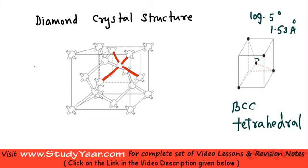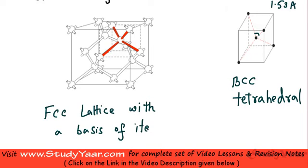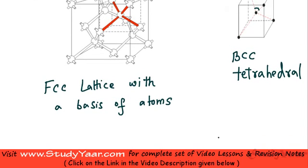Over here we have a diamond crystal unit cell. This is essentially an FCC lattice with a basis of 2 atoms. This basically means that at every lattice point you have 2 atoms that are present. One atom is present at (0, 0, 0) and the other is present at (1/4, 1/4, 1/4).